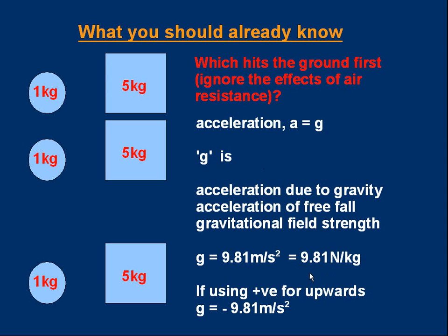If using g in calculations, you've got to be careful. If you're using positive to mean upwards, then g in the equations must be given a value of minus 9.81 meters per second squared because it acts downwards. This is information that I expect you already know.